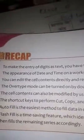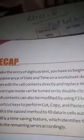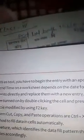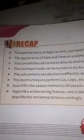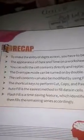To make the entry of a digit as text, you have to begin the entry with an apostrophe sign. The appearance of date and time on a worksheet depends on the date format applied to the cell.